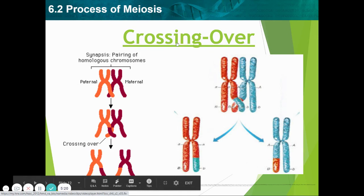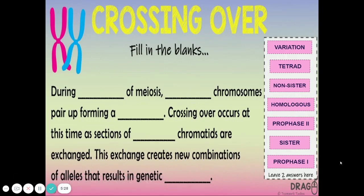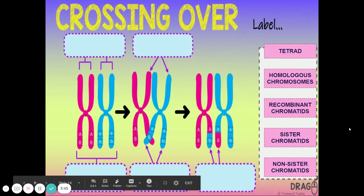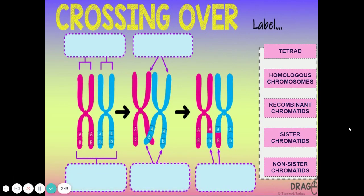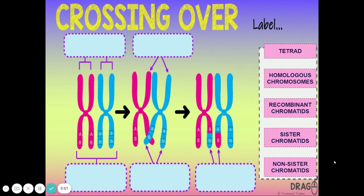There is a little video on crossing over — please look at that before proceeding. There are also three slides here for you to do a bit more with crossing over, which is an essential process that only occurs during prophase one, the first stage of meiosis. Just drag and drop the terms — some of the terms I was just talking about. If you need to go back and listen again to review some of these terms, then do so.